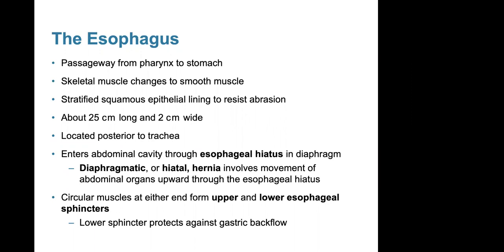The esophagus is located posterior to the trachea and enters the abdominal cavity by passing through the diaphragm at the esophageal hiatus. Diaphragmatic or hiatal hernias involve the movement of abdominal organs upward through the esophageal hiatus. Circular muscles form the upper and lower esophageal sphincters, and the lower sphincter protects against gastric backflow, preventing stomach contents from bubbling back up.